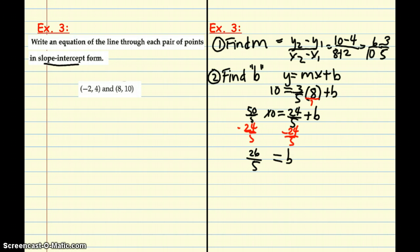And, so my y-intercept is b. So, we have a slope of 3 fifths. And, our y-intercept is 26 fifths, or 5 and a fifth, 5.2. So, then we can write our equation.